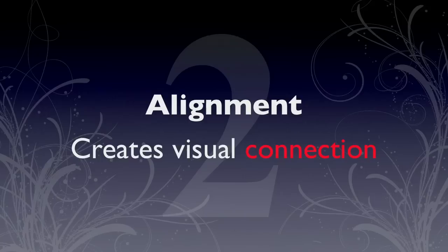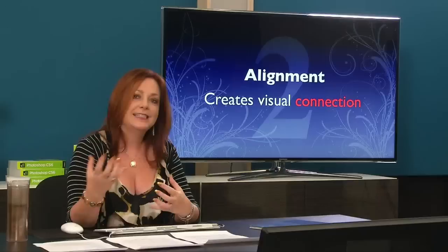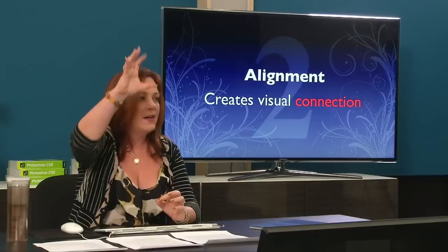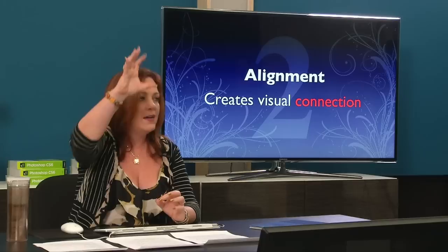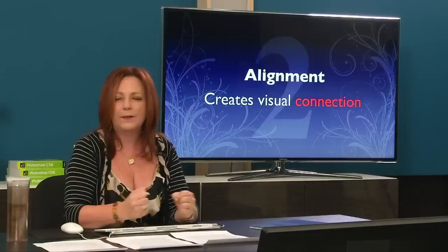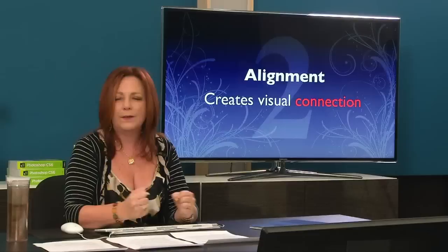The second secret is alignment. Alignment helps your eyes send messages to your brain, forming a visual connection between information on the page. It gives your eyes a hard edge to follow. Robin's got a great quote in her book that states the strength of the edge — or alignment — is what gives strength to your whole layout. If you've got a strong alignment, then your whole piece is going to feel stronger and more cohesive.